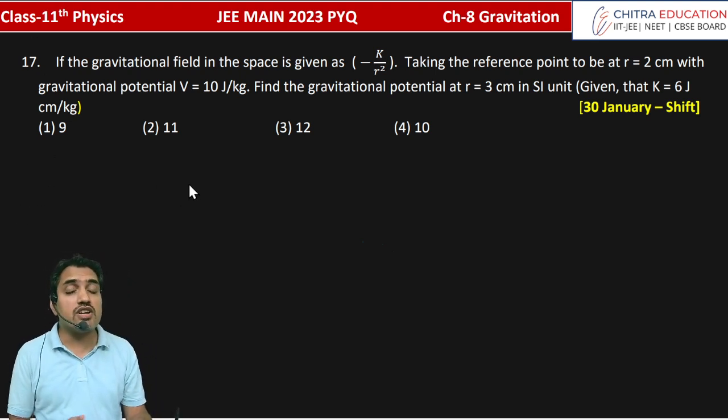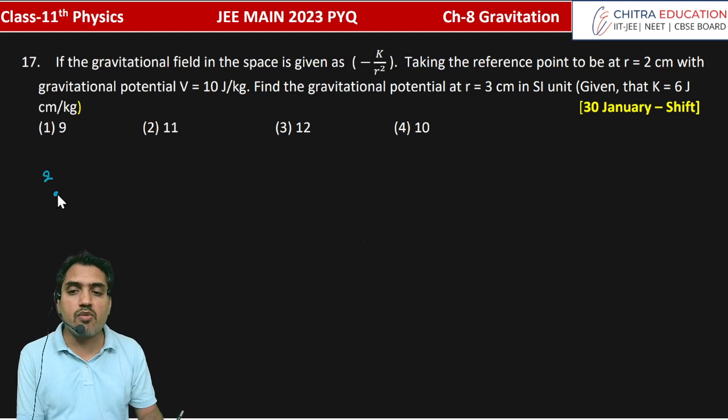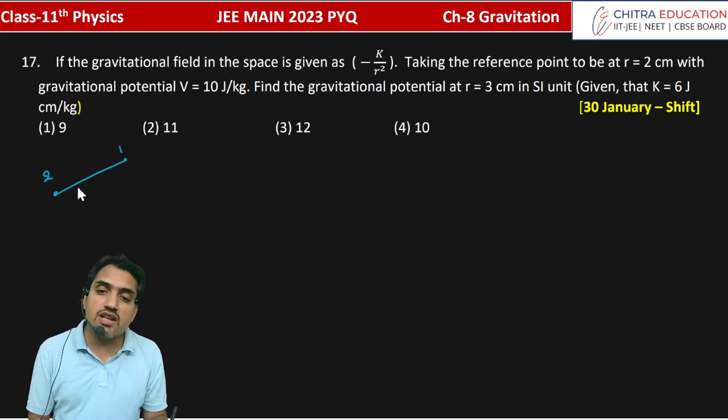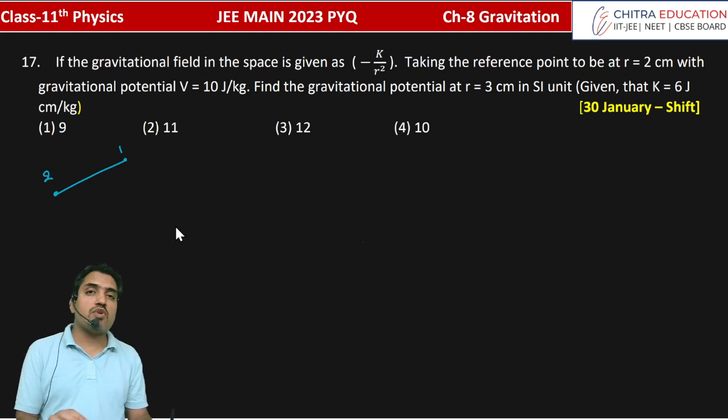If we have the gravitational potential difference here, we have two points, one is number 2 and one is number 1. At these points we need to find the gravitational potential difference.